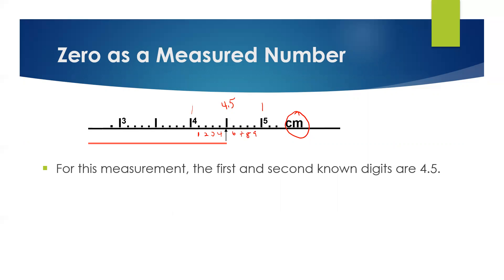So what do we do when it's exactly on a graduation? We know for sure that it's 4.5. But remember, we could go one to the right of that. For sure, those two digits, and one to the right was the estimated digit that we call the doubtful digit. So because our instrument is reading to the tenths, we should be able to go to the hundredths place.